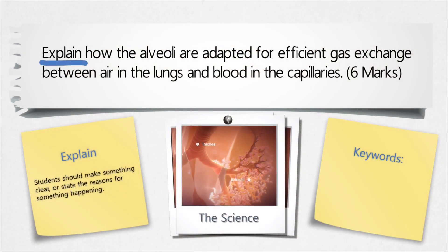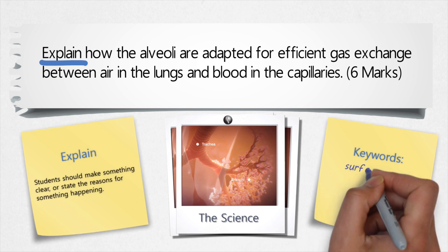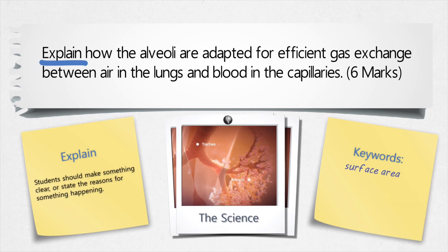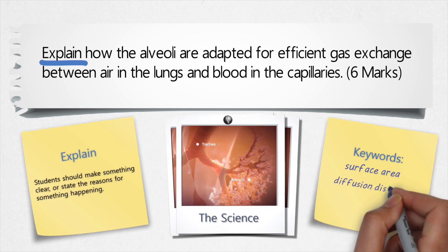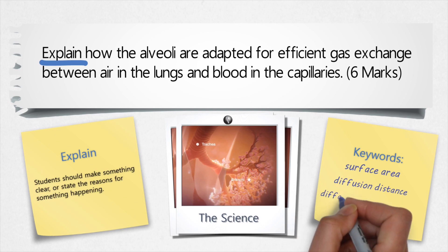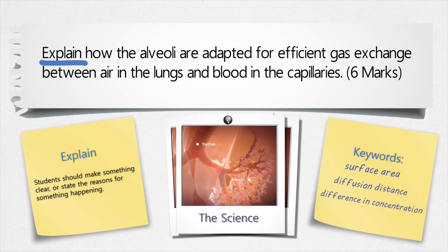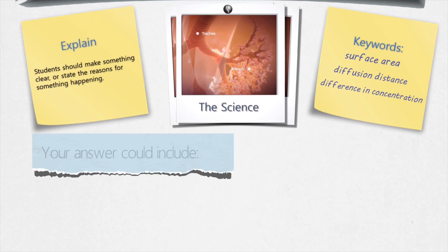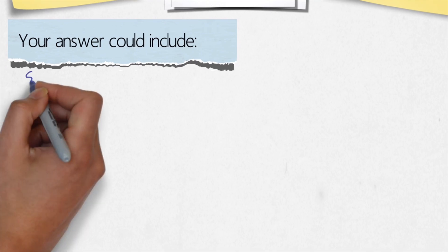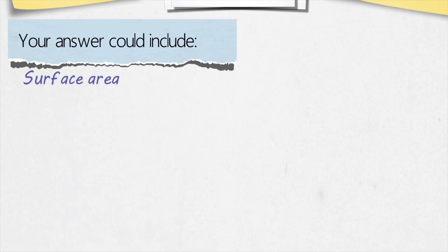Now we've looked at the science, let's go back to the question: explain how the alveoli are adapted for efficient gas exchange between air in the lungs and blood in the capillaries. We have to make the point about how they're adapted and then how that helps gas exchange. The keywords we want to use are based around three ideas: surface area, diffusion distance, and how we keep the difference in concentration between the gases.